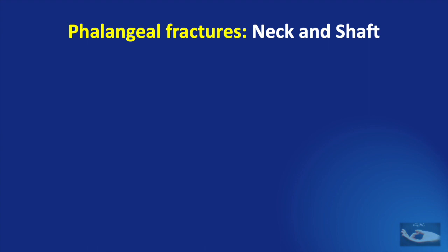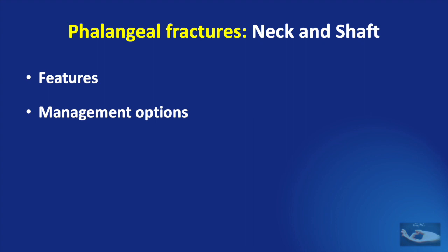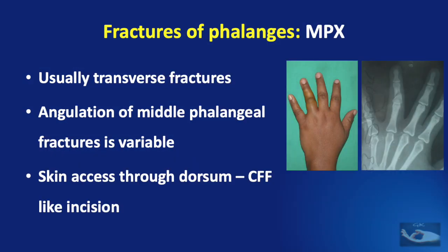When we talk about phalangeal fractures of the neck and shaft, we shall be looking at the features and the management options. Since there are so many management options, we shall need to look at the decision-making process and how the protocol of management is going to be decided, customized for each patient. The skin axis to expose this fracture would be through the dorsum with a cross-finger flap-like incision, which will be described later in this video.